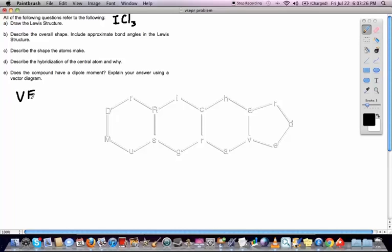Valence electrons will be 7 for iodine plus 3 times 7. Each of those chlorines is in group 7. That's going to be a total of 28. Valence electrons should always come out to be an even number.